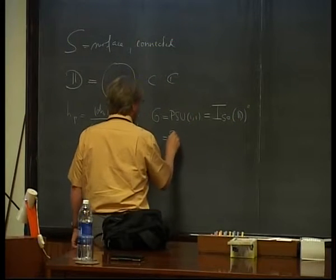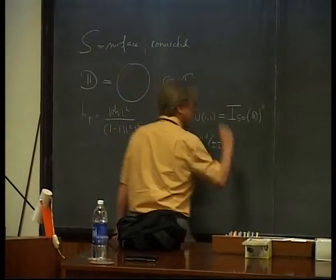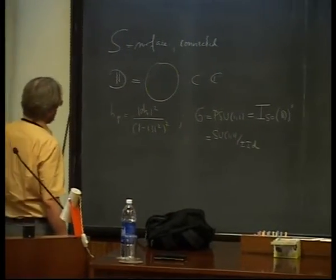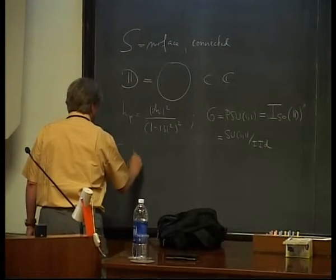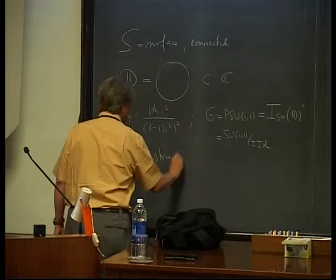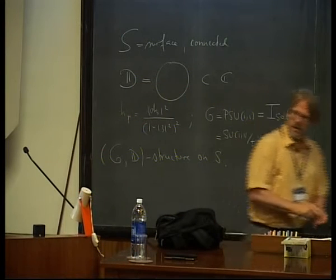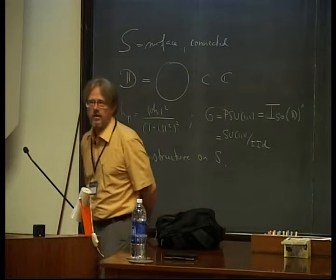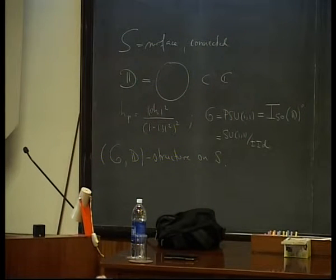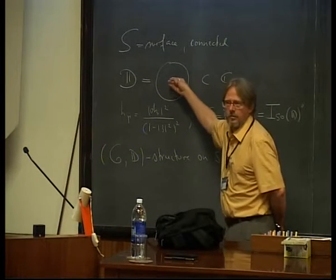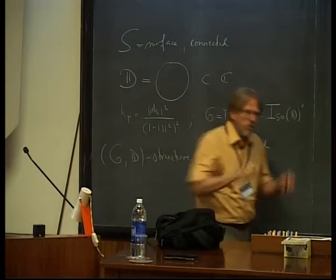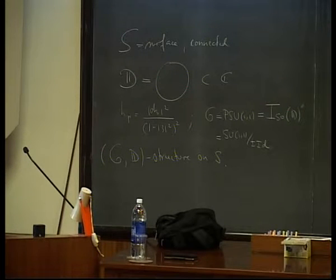This is just to set the notations and we will call for the first half of this talk G, the group of orientation preserving isometries of the Poincaré disk. It is very well known that it is obtained as the quotient of SU(1,1) modulo the center which acts trivially. Now a hyperbolic structure, we're going to think of it as being a (G,D) structure on S. That's probably the most basic way to think about the hyperbolic structure right after you learn the definition of what is a manifold with charts and changes of charts.